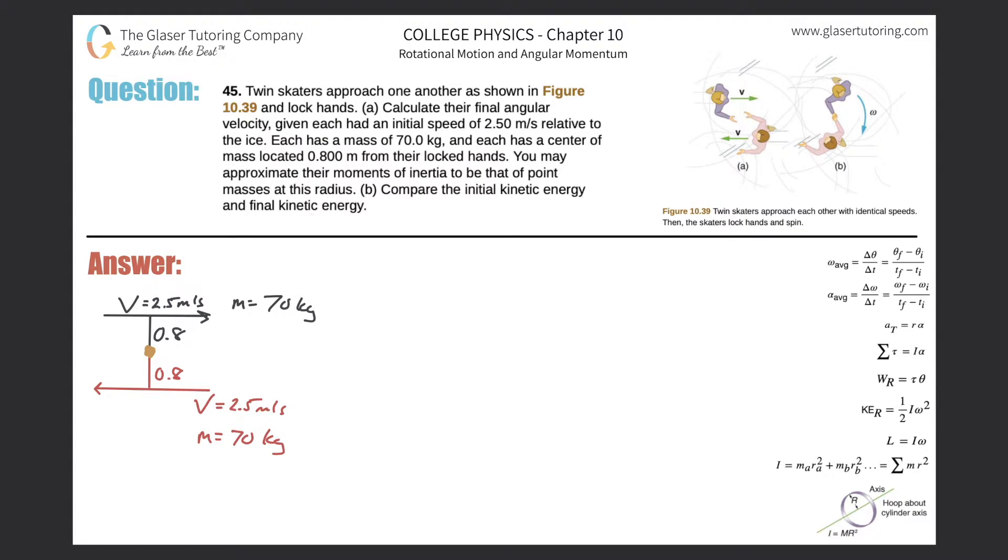Number 45. Twin skaters approach one another as shown in Figure 10.39 and lock hands. Letter A: calculate their final angular velocity given each had an initial speed of 2.5 meters per second relative to the ice, each has a mass of 70 kilograms, and each has a center of mass located 0.8 meters from their locked hands. You may approximate their moments of inertia to be that of point masses at this radius. The picture's up here. I just drew another simplified picture. Here's where they lock hands. You got two objects, one moving with a velocity that way, the other with a velocity that way. They're both located 0.8 meters away from the point at which they lock hands. They have the same masses and the same velocities.